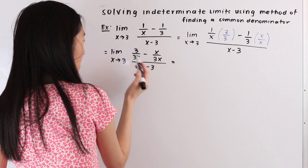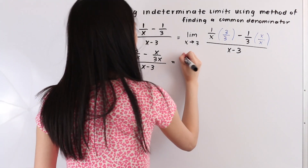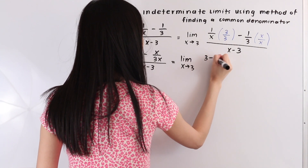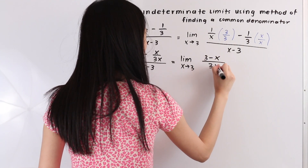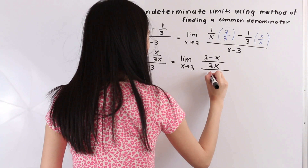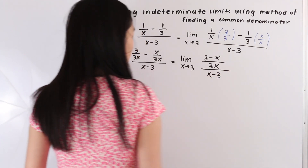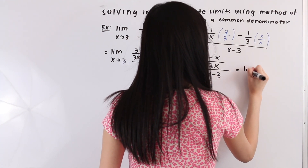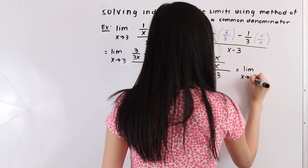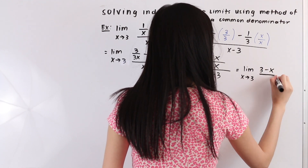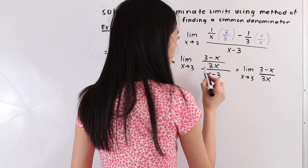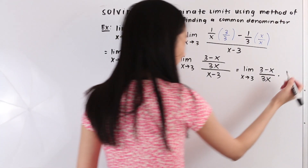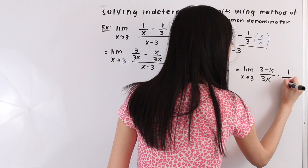Now let's go ahead and combine these two terms. So we have the limit as x approaches 3 of 3 minus x over 3x, all over x minus 3. And now let's rewrite this as follows: the limit as x approaches 3 of 3 minus x over 3x, and we're going to change this divided by into a multiplication sign and take the reciprocal of the denominator, so we have 1 over x minus 3.